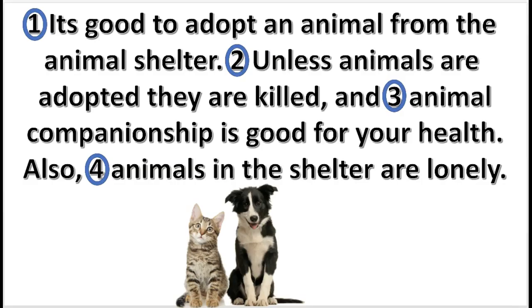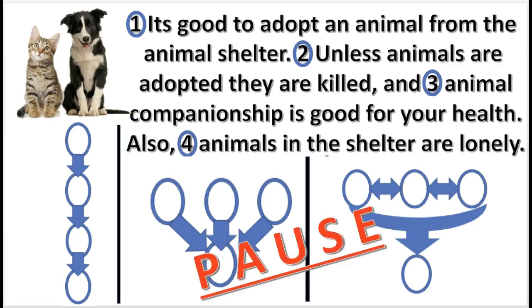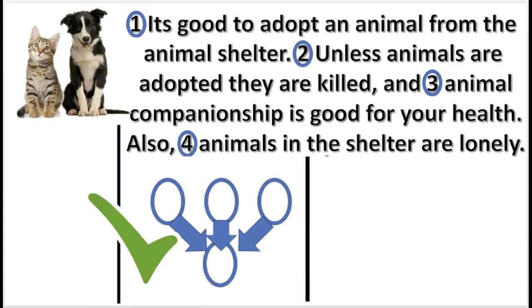Here is a final practice problem. Begin by choosing the correct pattern for this argument. Press pause — the answer is in 3, 2, 1. Ding! That is correct. Three premises support a conclusion independently.